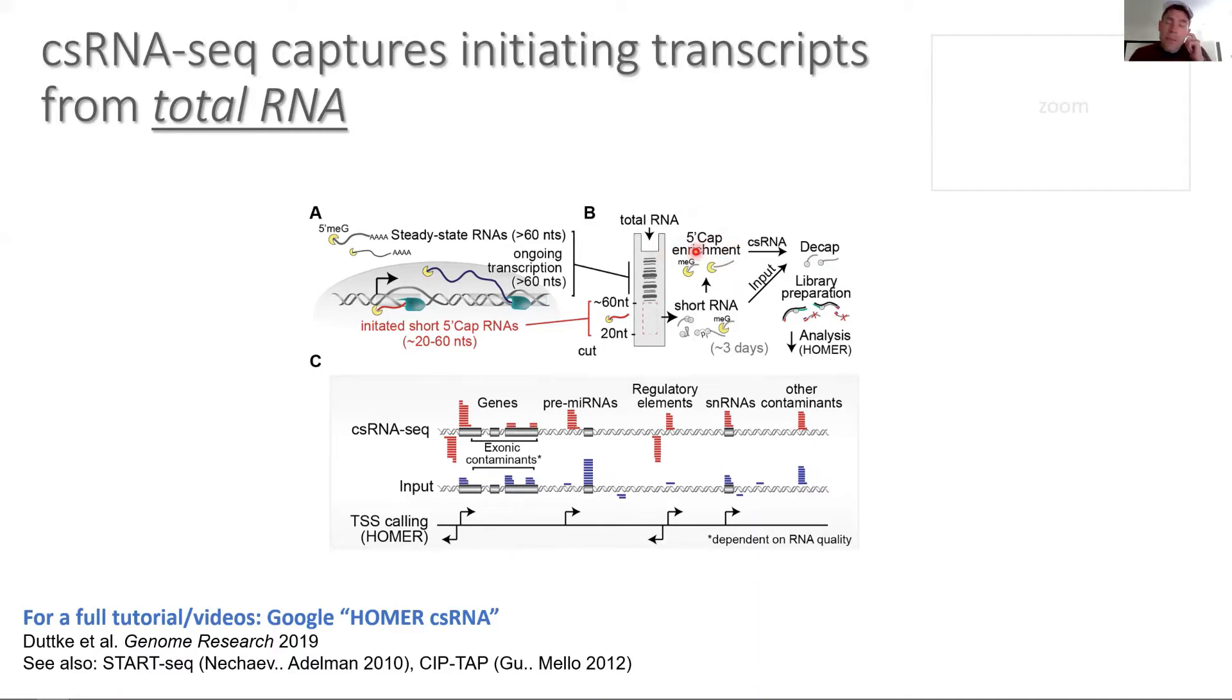That's why we use a second enzyme that you all know called CIP, which just removes mono, di, and triphosphates but doesn't remove caps. Then basically, hopefully we have all our small RNAs that don't have a cap dephosphorylated or degraded. When we decap it, we have monophosphate 5-prime and then small RNA that can be used for library preparation.